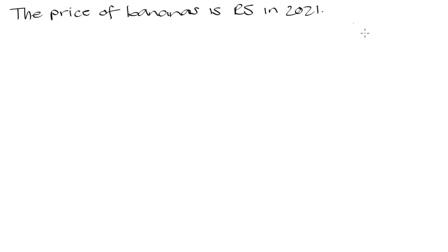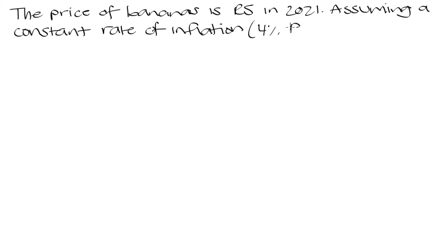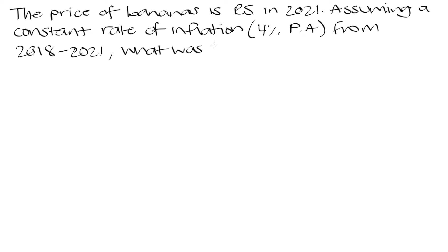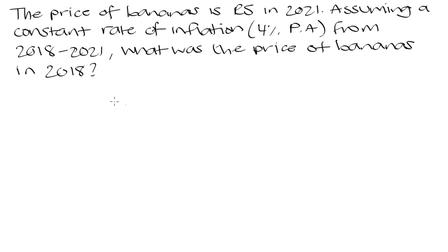Let's go over another example. Assuming a constant rate of inflation of 4% per annum from 2018 to 2021, the price of bananas in 2021 is 5 rand. What was the price of bananas in 2018? So we're told the 2021 price is 5 rand, there was a constant inflation rate of 4% per annum from 2018 to 2021, and we need to determine the price of bananas back in 2018.